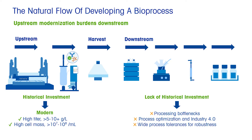Bottlenecks are prevalent in every unit operation. Many of the common bottlenecks include areas around harvest, high cell masses and debris, and variable particle conditions at the end. Buffer usage or excessive consumption concerns, point of use preparation, storage and stability, and floor space occupancy, simultaneous excipient tracking and verification. In many cases, it is common to lose sight of many process conditions with multiple excipients. Water usage, high consumption of distilled water (WFI), and other infrastructure limitations and burdens are also significant concerns.